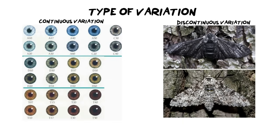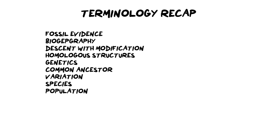When it comes to variation within a species, there are two types: continuous variation and discontinuous variation. Continuous variation means there is an endless range of possible combinations with many in-betweens — eye color is a perfect example, with humans displaying many shades and mixtures. Discontinuous variation means there are only two or a few distinct options with no in-betweens, like the peppered moth, which is either black or white — both the same species, but only two possibilities.